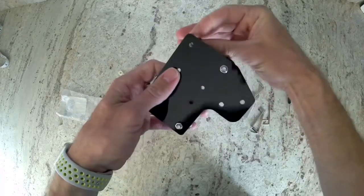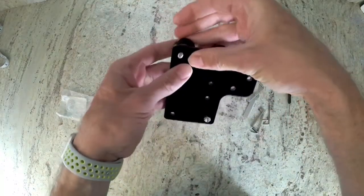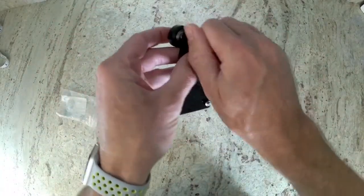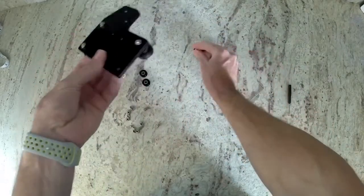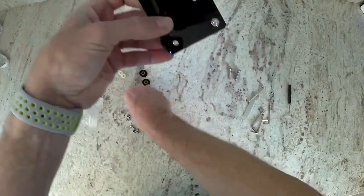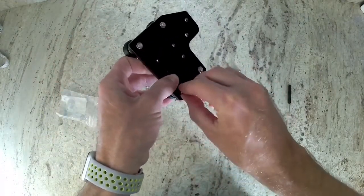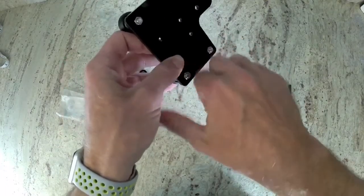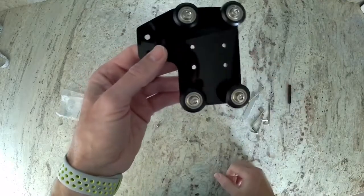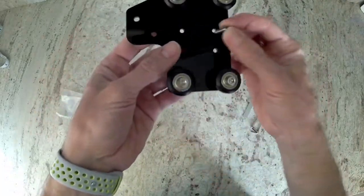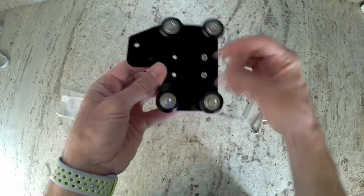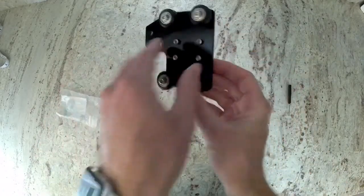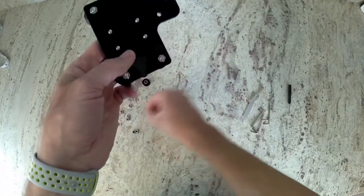Now the ones with the nylon washers will go in the smaller hole. Now if you flip the acrylic piece around, we're going to install those four small bolts. Then flip it around, and we're going to install the T-nuts on there.